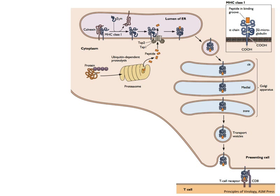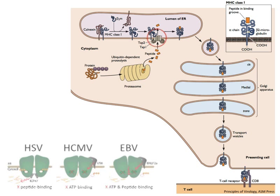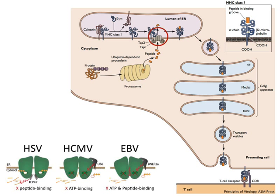Can this be interfered with by viruses? Of course—tons of ways. The TAP transporter is a big target. Here are three different viruses that make proteins that interfere with the transporter: herpes simplex virus, human cytomegalovirus, and Epstein-Barr virus—all herpesviruses. These are all viruses that tend to cause persistent infections—they stay with you forever. All of you have at least one of these viruses; their genome is in you, and periodically they make virus and you shed them.